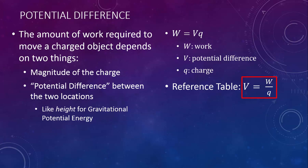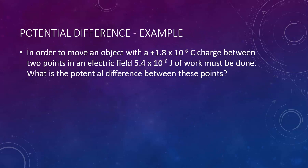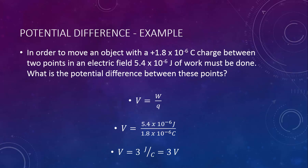Let's take a brief look at the units. If we plug in an amount of work and an amount of charge, we plug in joules over coulombs, giving us joules per coulomb. This has a special name: a joule per coulomb is called a volt — you've definitely heard about volts before. For example: to move an object with a charge of positive 1.8 × 10⁻⁶ coulombs between two points in an electric field, 5.4 × 10⁻⁶ joules of work must be done. What is the potential difference? V equals W over Q — we plug in the work done and the charge, and find that the potential difference is 3 joules per coulomb, otherwise known as 3 volts.